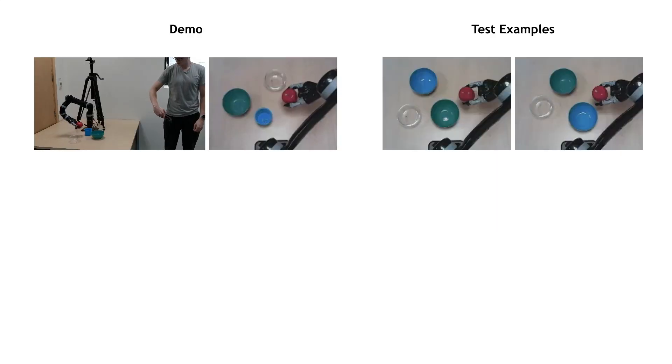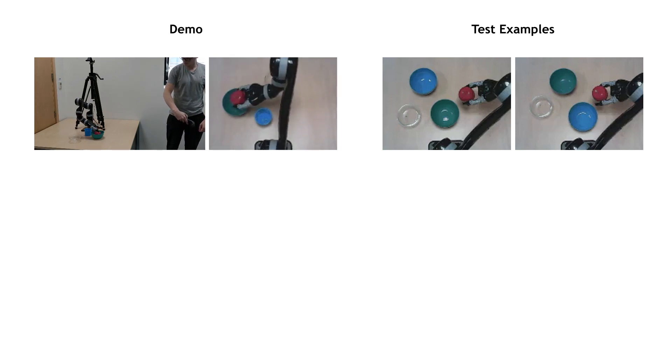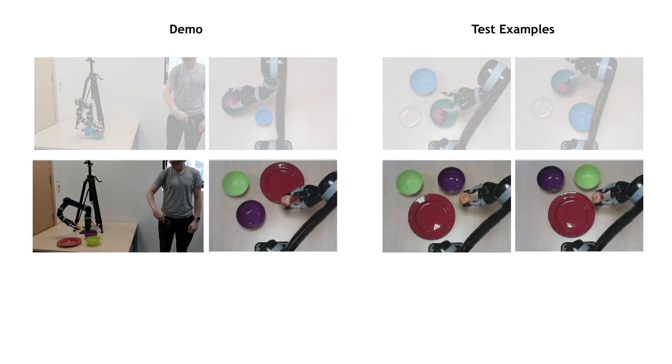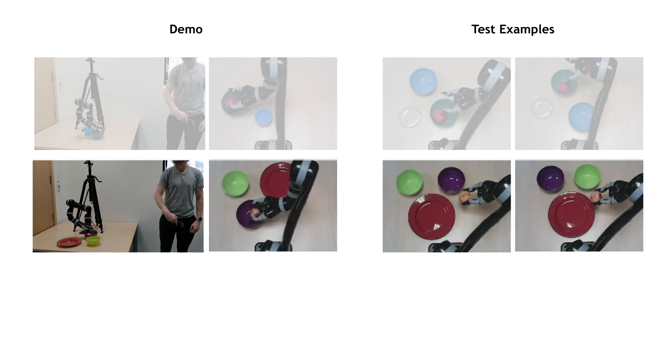We randomly select one holding object and three placing targets from our test set of real world objects, and then show the robot a single demonstration via human teleoperation using the HTC Vive. The robot can then complete the same task in different configurations.